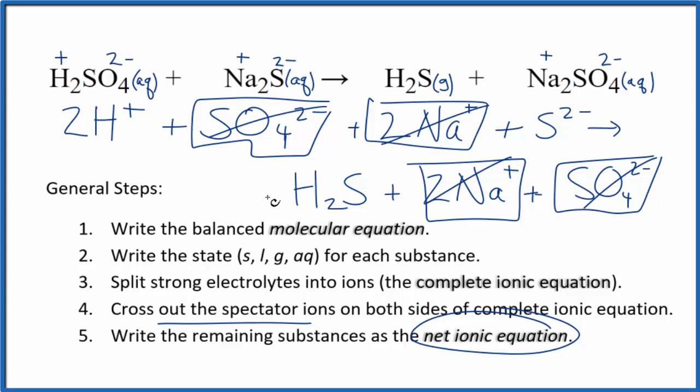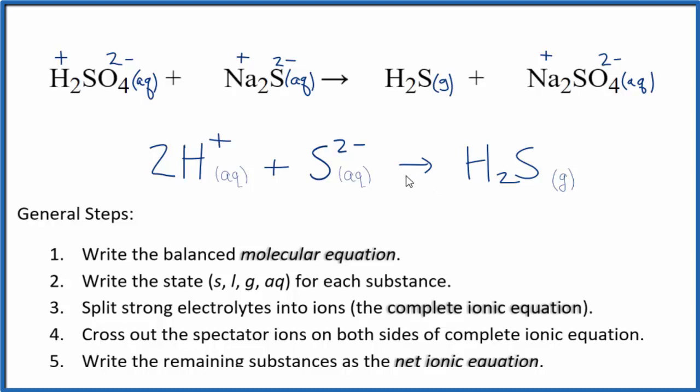Let me clean this up. We'll write the states in, have our net ionic equation. So this is the balanced net ionic equation for sulfuric acid plus sodium sulfide. If we look at the charge, we have 2 times 1+, that's 2+, and a 2-, so that gives us a net charge of 0 on this side. For the products, we have a neutral compound net charge of 0. Charge is balanced. If you count the atoms up, they're balanced as well.